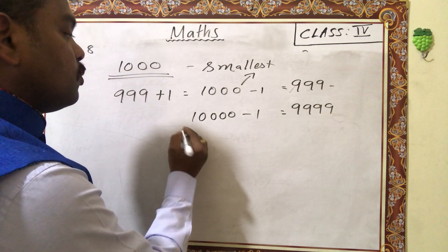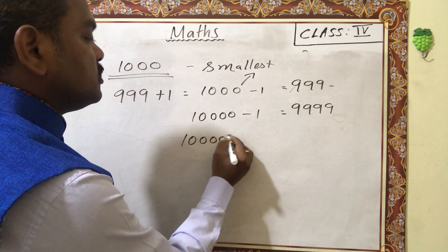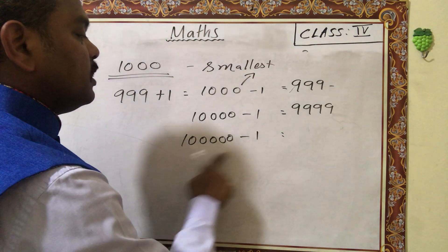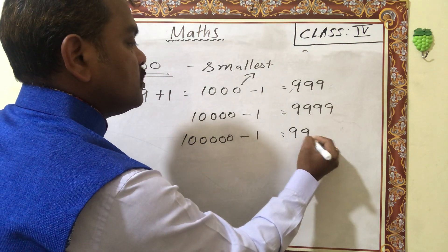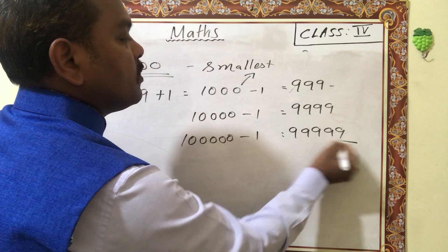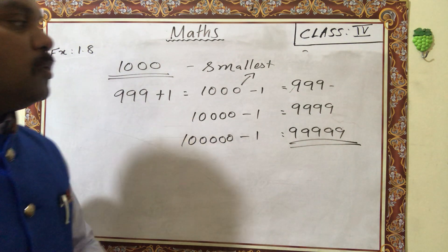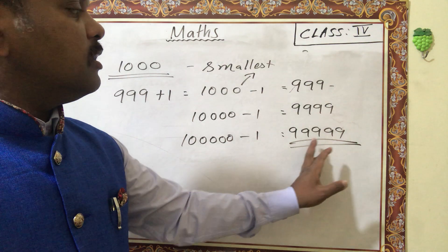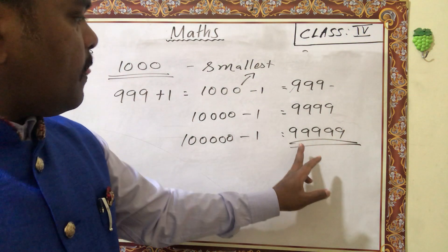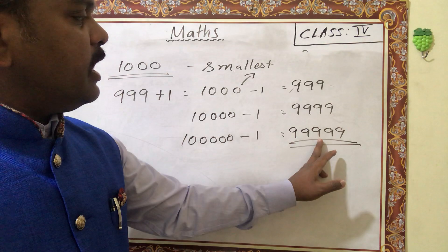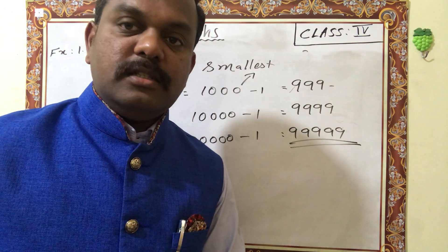Next, one lakh minus 1. One less than one lakh is 99,999. And one less than one million — counting the zeros: one million has six zeros, so one less than one million is 999,999.